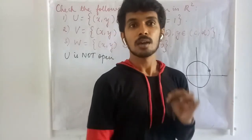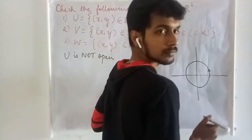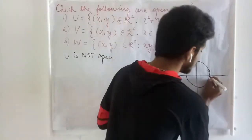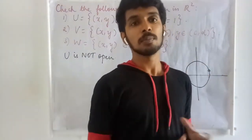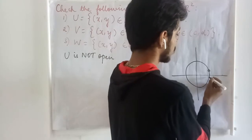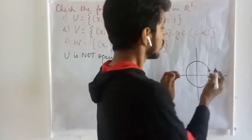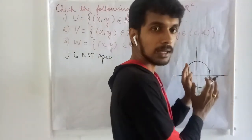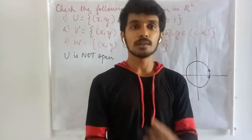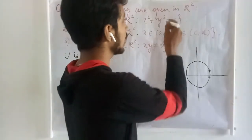Whatever point you take on this circle, all the points on this circle are limit points of the set. Even if I choose a point very close to the circle, I can find a neighborhood that contains points both inside and outside. So we may conclude that this set is not open.